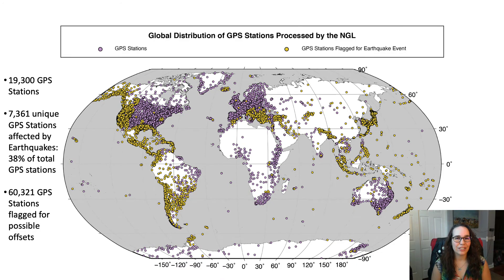The Nevada Geodetic Laboratory processes data for over 19,000 GPS stations worldwide. 7,361 GPS stations are affected by earthquakes since January 1, 1994. Those stations account for over 60,000 possible earthquake offsets total.